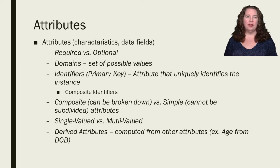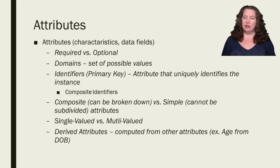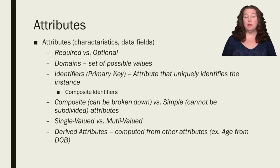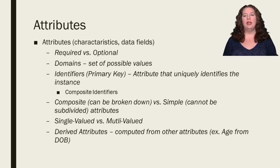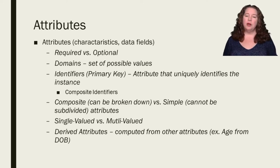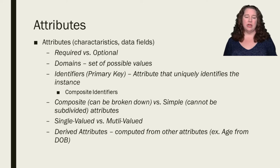Sometimes someone will say obviously the address has to be required — city, state, zip. But sometimes it depends. Do we really need the full address, or can we just do zip code and pull the city and state from that? Think about those options while you're designing. We have the option of a domain — the possible range of values, from zero to infinity, from five to ten, a GPA of zero to 4.0. Your set of possible values. We can include it in our ERDs so that when somebody looks at our ERD, they know those possible values.